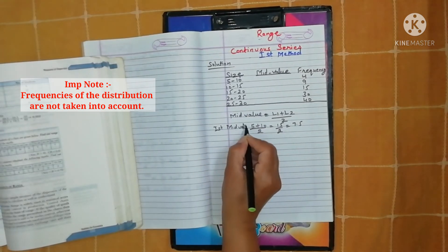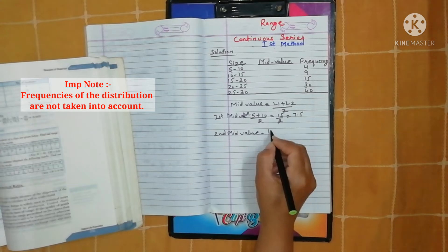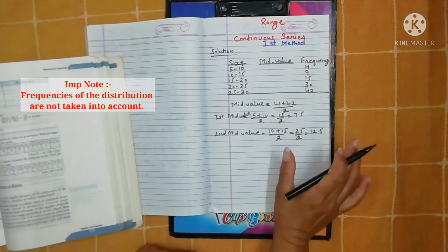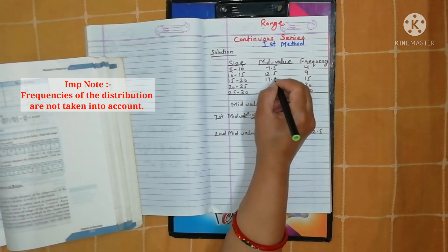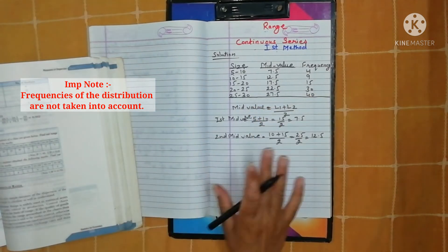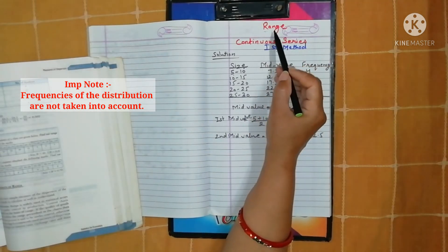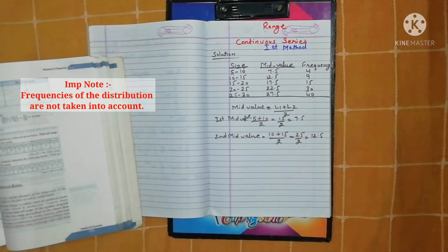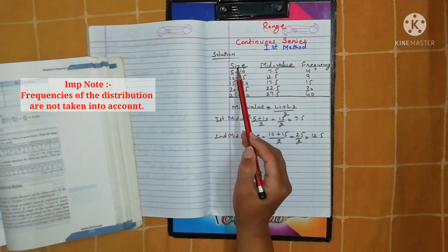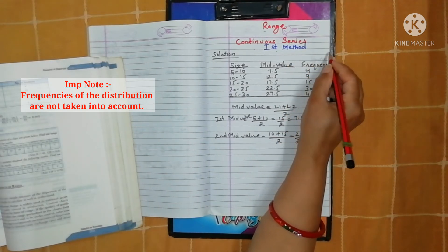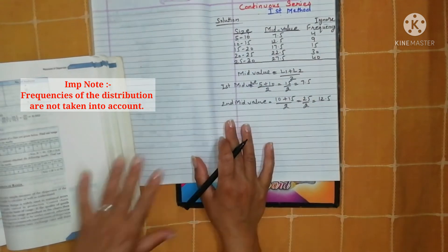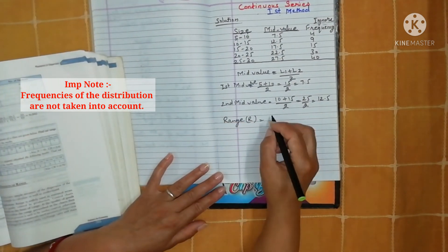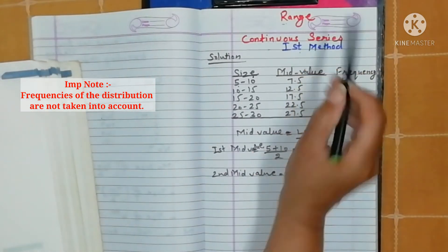We find the mid values using the formula: (L1 + L2) / 2, meaning lower class interval plus upper class interval divided by 2. For example, one mid value equals 12.5. We calculate all the mid values this way.